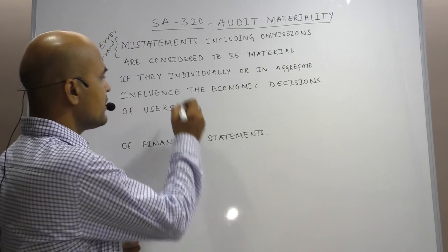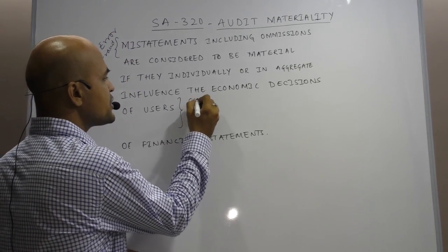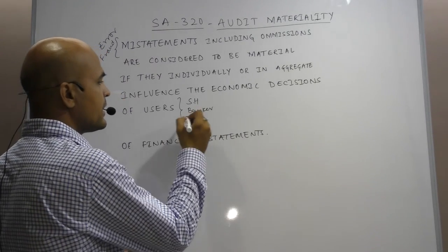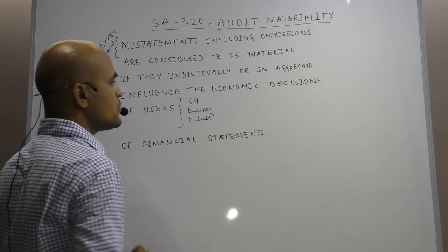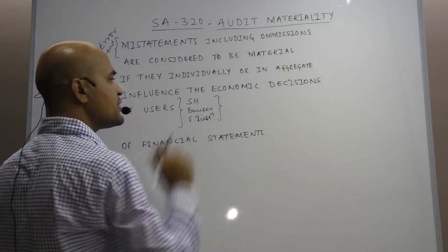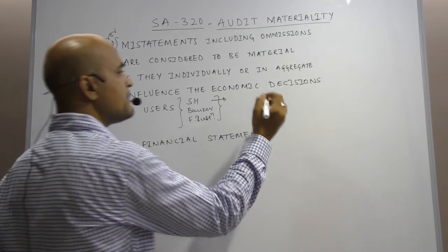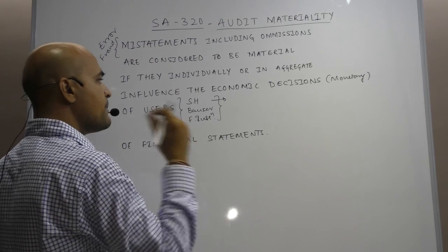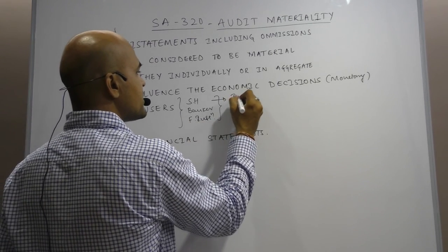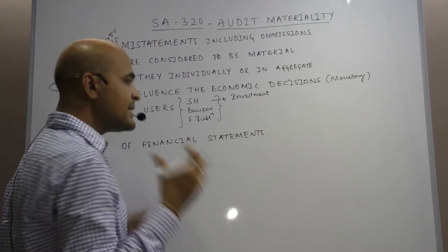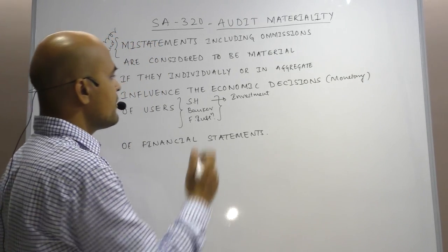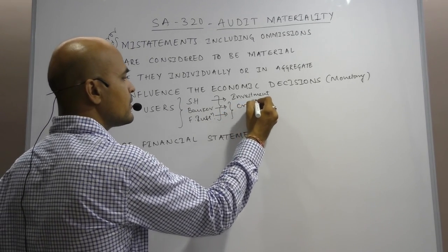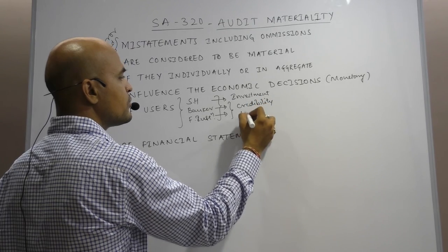Now these three terms are very important. When I say users, it can be a shareholder of the company, a banker to the company, or a financial institution. These users take some economic decisions — monetary decisions. Shareholders decide whether to invest in a company or not, while bankers and financial institutions determine the credibility of the company and whether to give a loan or not.